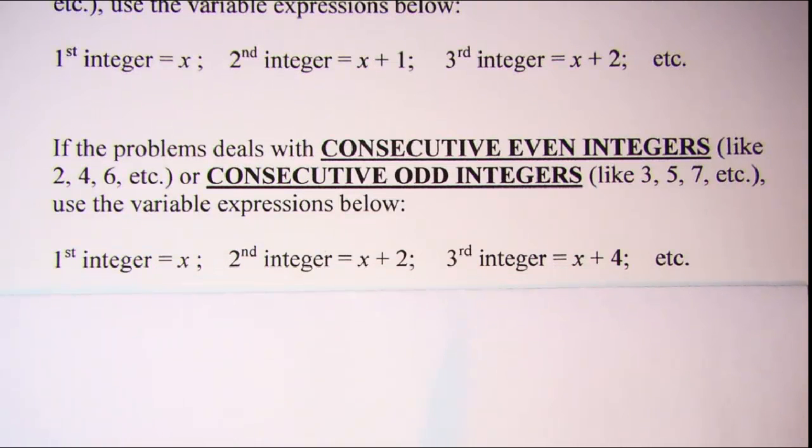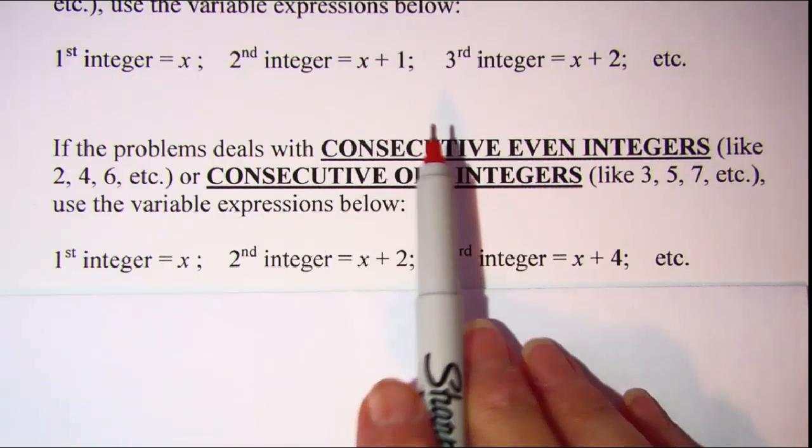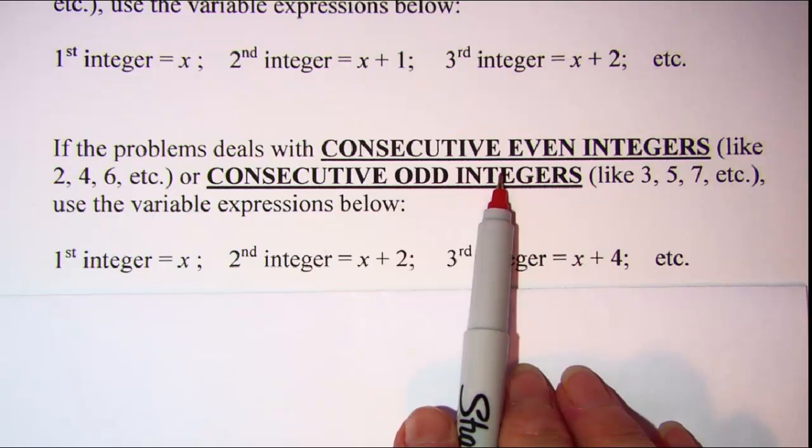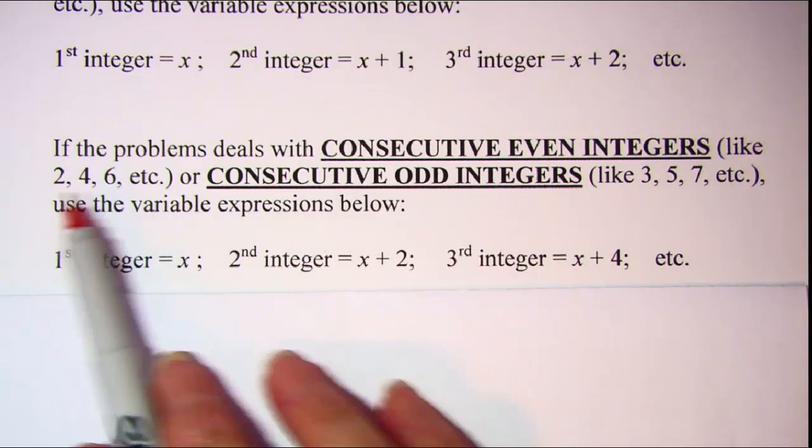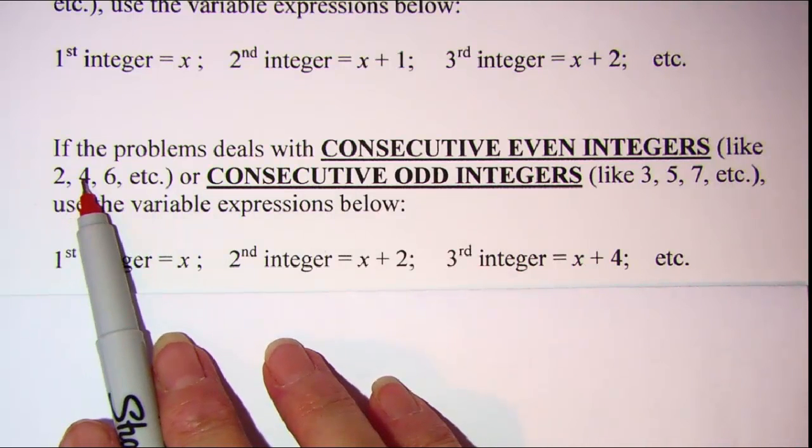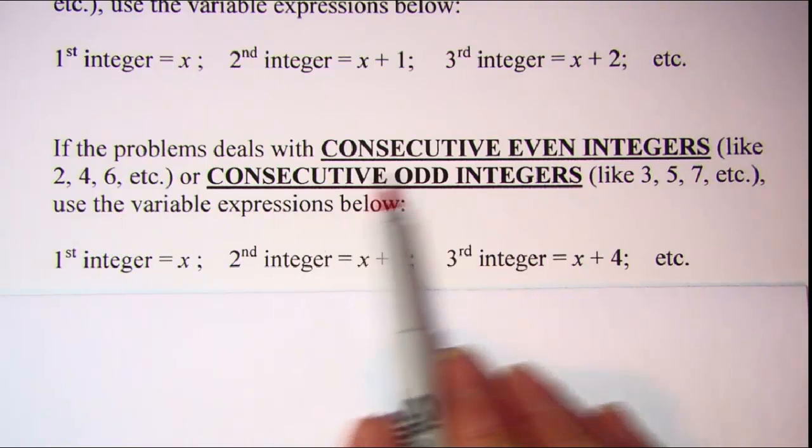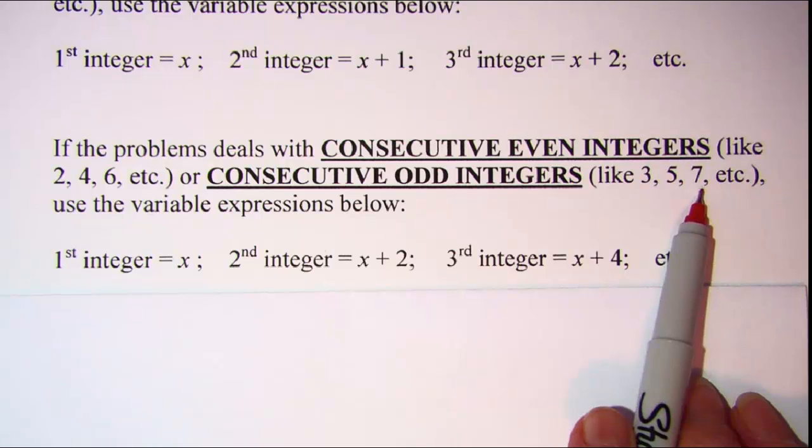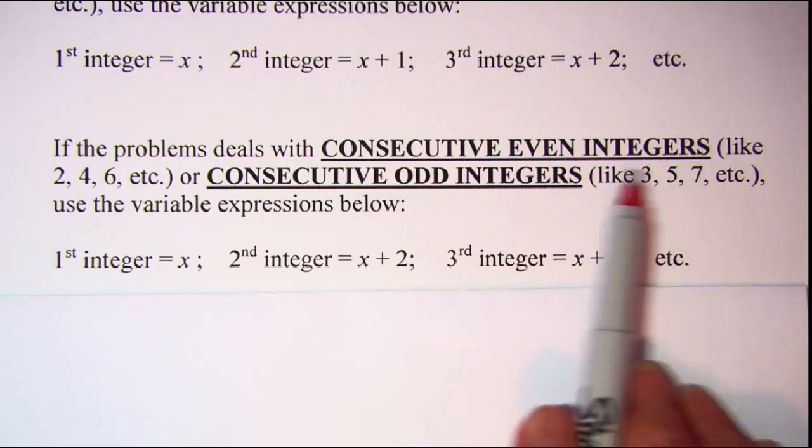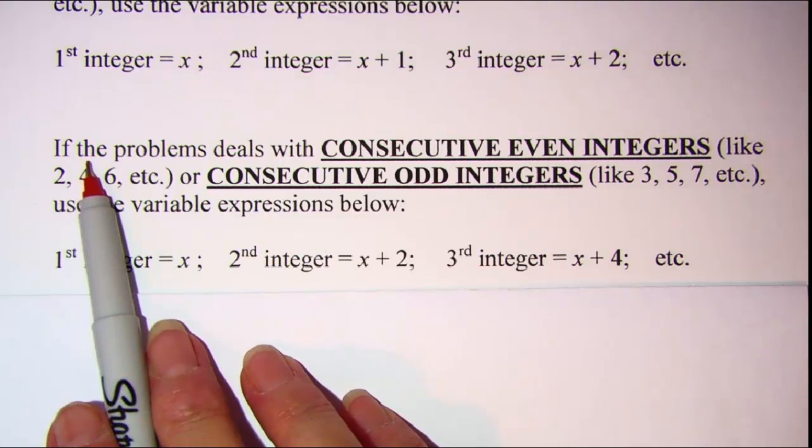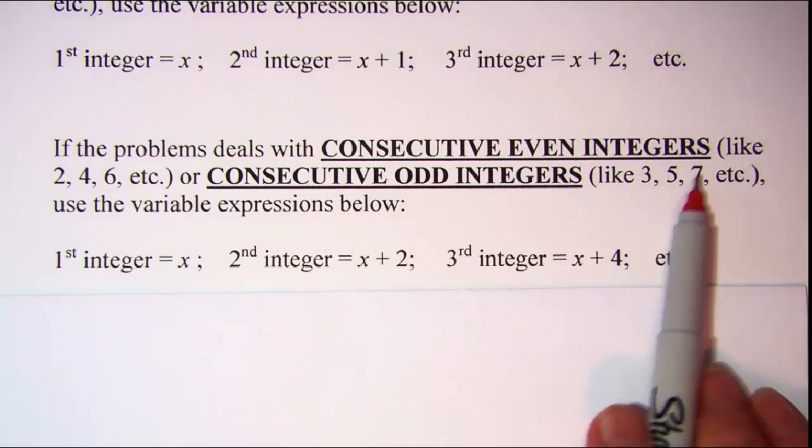If your problem deals with either consecutive even integers or consecutive odd integers, so if you're dealing with numbers like 2, 4, 6, 8, 10, 12, 14, and so forth, or 3, 5, 7, 9, 11, and so forth, then you're going to want to add 2 to get to the next even or to get to the next odd.